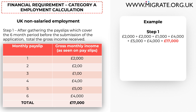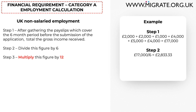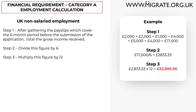For example, here you can see a table showing the six monthly pay slips covering the six months prior to submitting the application. The total gross monthly pay shown on the six pay slips totals to £17,000. Step 2: divide this figure by 6, regardless of whether the pay slips are issued monthly, weekly, or daily. Continuing from this fictitious example: £17,000 divided by 6 is £2,833.33. And then step 3: multiply this figure by 12. £2,833.33 multiplied by 12 is £33,999.96. This is therefore the amount of non-salaried employment income that can be included towards the financial requirement under category A.